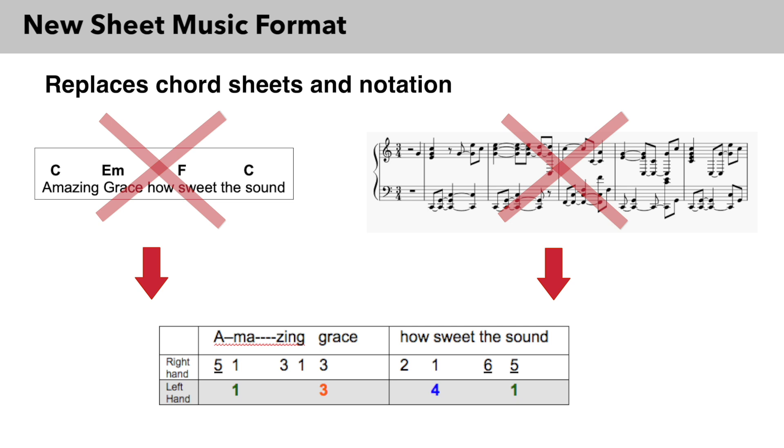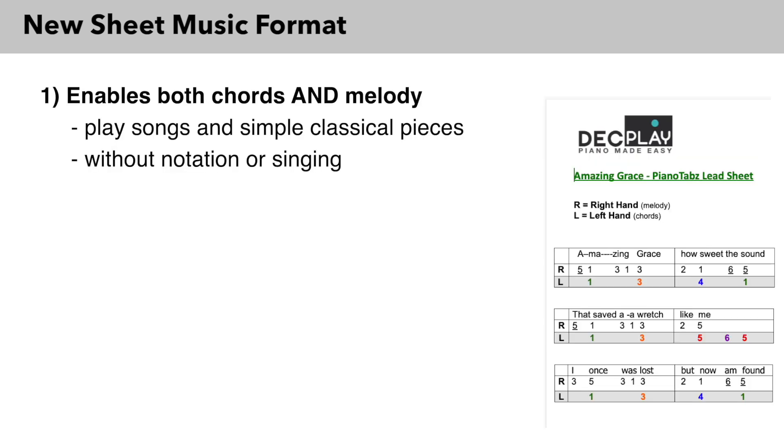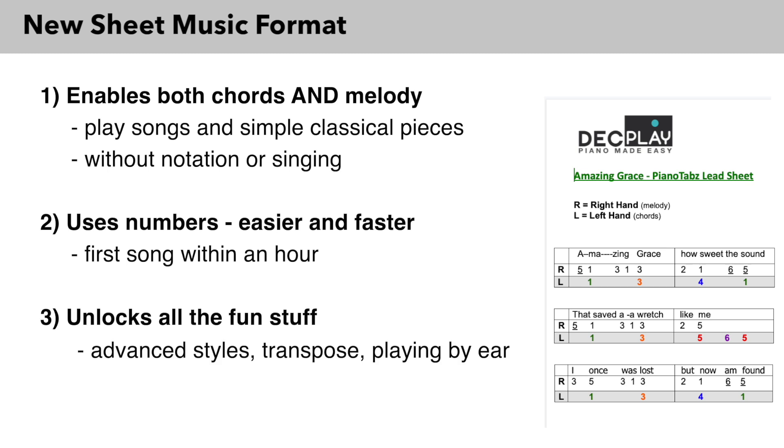It's a new type of sheet music that replaces chord sheets and notation to give you three huge benefits. Number one: it enables both chords and melody to be played so you can play songs and simple classical pieces without using notation or needing to sing the melody. Number two: it uses numbers to make learning piano easier and faster, with absolute beginners often playing their first song within an hour. Number three: it unlocks all the fun stuff. Numbers are not only easier for beginners, but in the same way they are used by jazz musicians, these relative numbers enable you to play advanced styles instantly transposed into any key and develop playing by ear skills.